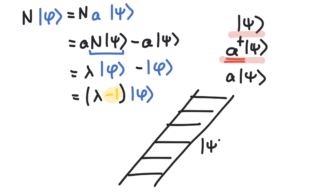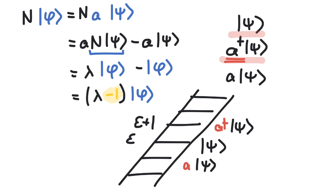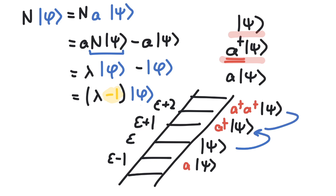If we start with a state psi which has some energy epsilon, then a dagger acting on psi is also a solution of the Schrödinger equation with energy epsilon plus 1, and a acting on psi is a solution with energy epsilon minus 1. This goes on and on — a dagger a dagger acting on psi is a solution with eigenvalue epsilon plus 2. So to summarize, the reason ladder operators are so useful is that if we start at a certain solution psi, we can repeatedly apply them and get every other solution of the Schrödinger equation. And the reason we found out about this useful behavior was by introducing the number operator N.